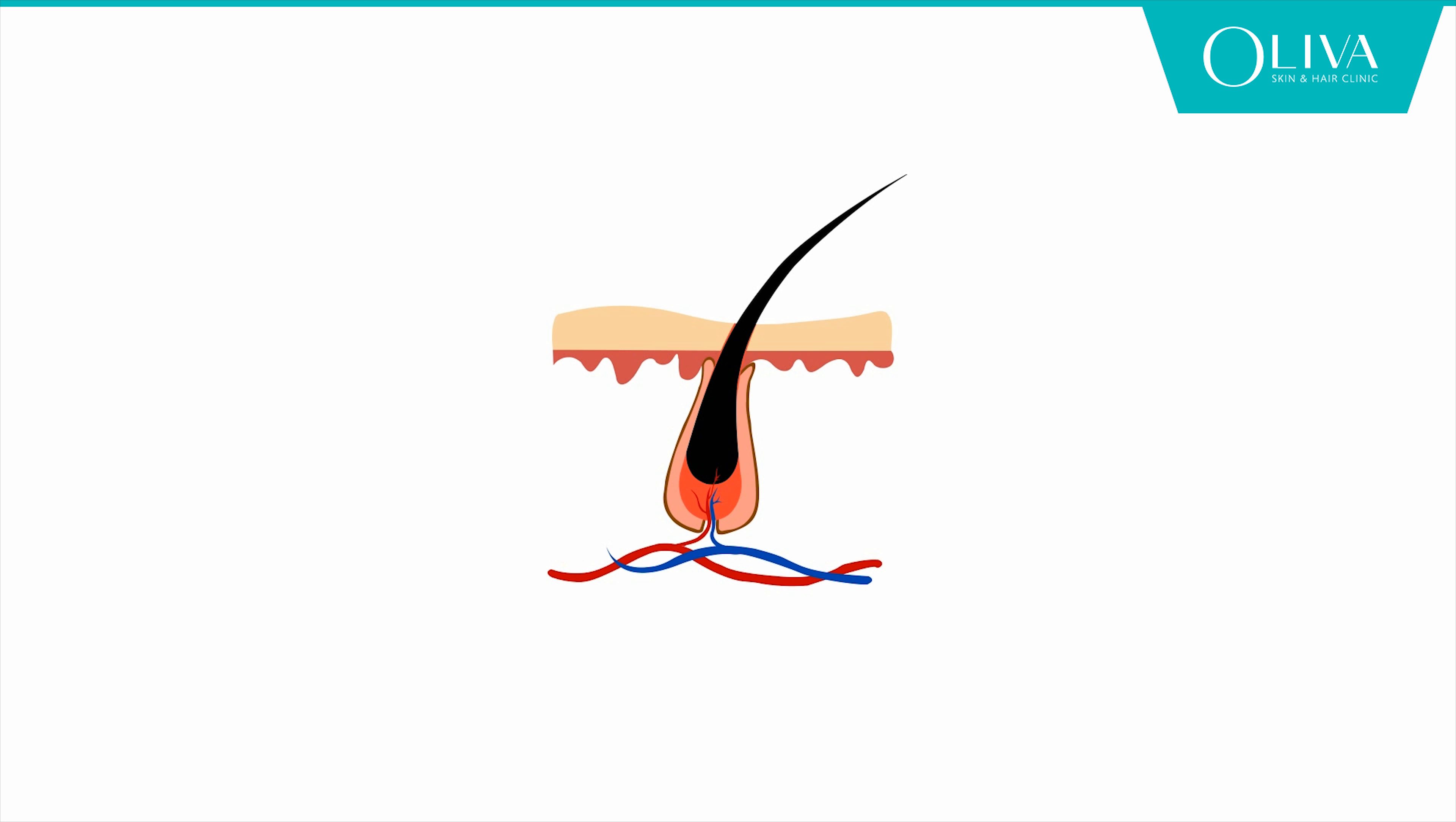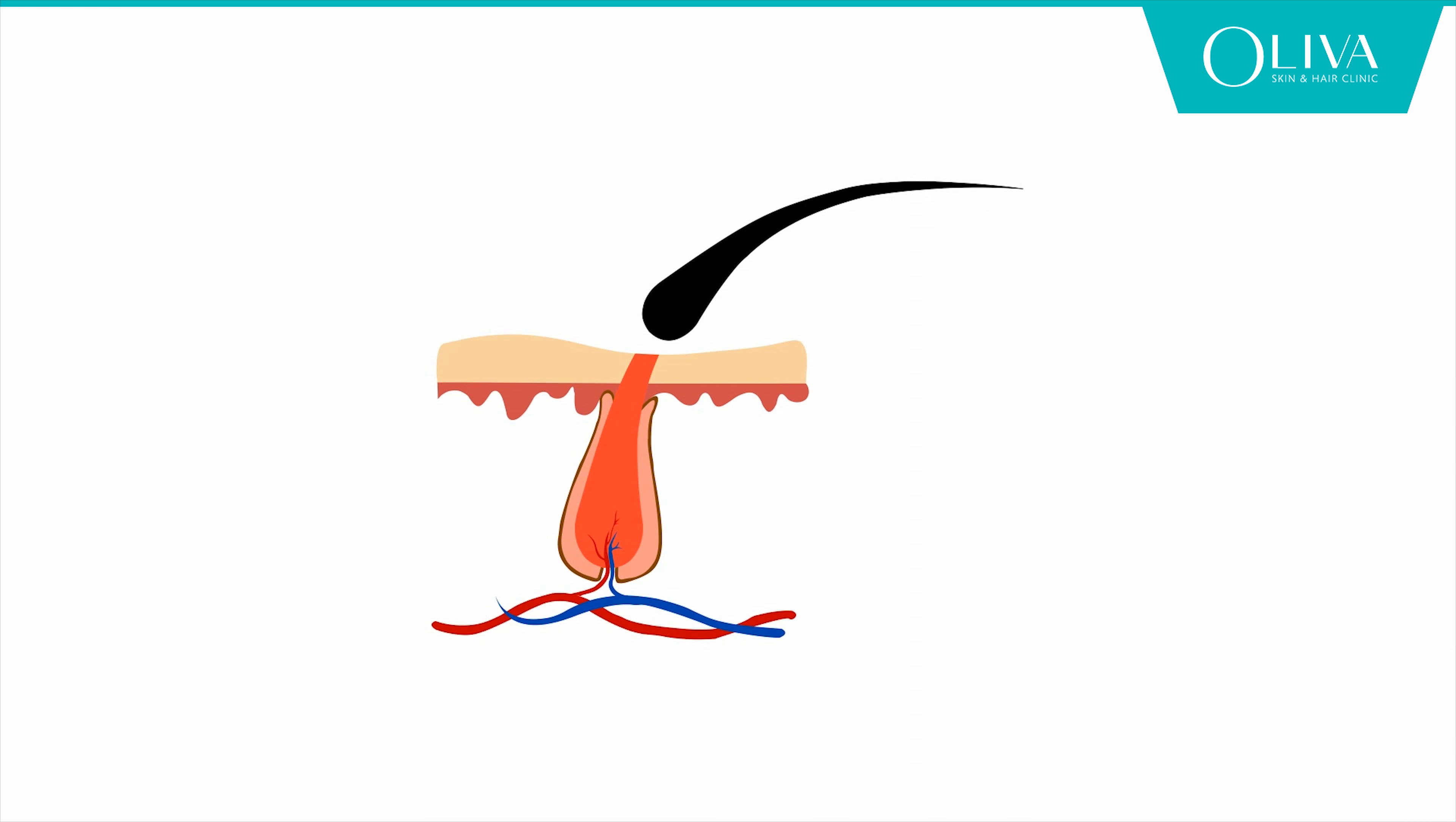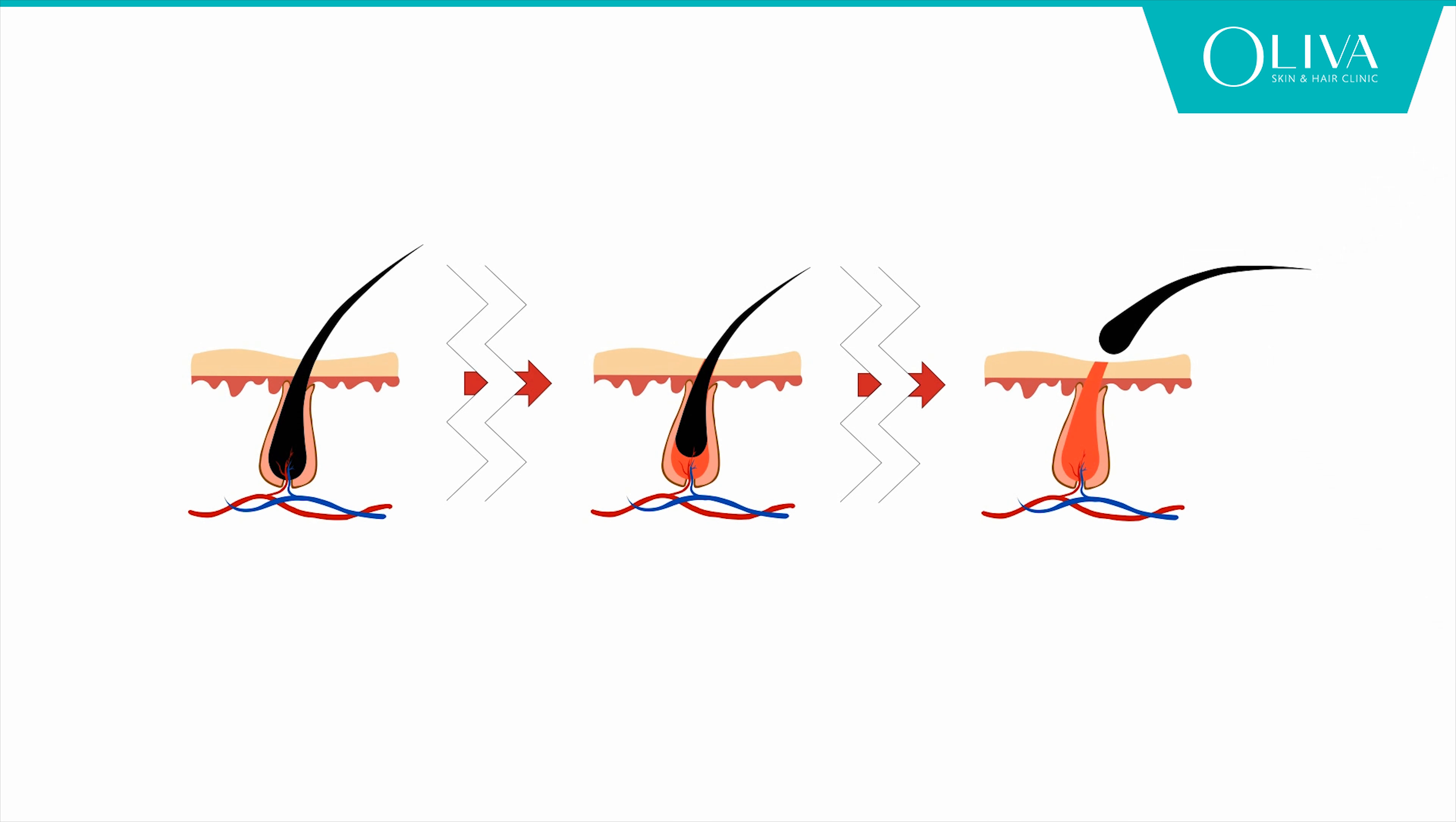The last phase is telogen phase, or resting phase. It is in the telogen phase that the hair is released and falls out. When this hair growth cycle is disrupted, it leads to hair fall and hair thinning.